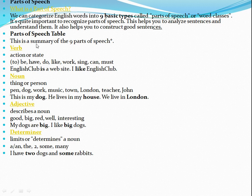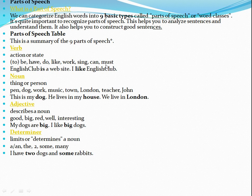There is a table — a summary of nine parts of speech. The very first is verb. Since your childhood you have been taught what a verb is. A verb shows action or state of being. Examples: to be, have, do, like, work, sing, can, must. For example: 'English club is a website' — 'is' is a verb. 'I like English club' — 'like' is a verb.